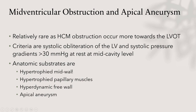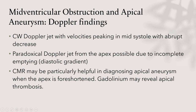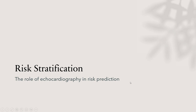Not all MR in HCM is related to SAM — it may be related to mismatch of the anterior and posterior leaflets. The MR jet is most often posterior and lateral in SAM-related HCM, so a central or anterior jet should increase suspicion for intrinsic mitral valve disease. Because the MR jet is often eccentric, quantification may require CMR volumetric assessment. Mid-ventricular obstruction with apical aneurysm is a relatively rare but underrecognized variant, defined by systolic obliteration of the LV with a systolic pressure increase >30 mmHg at the mid-cavity level.